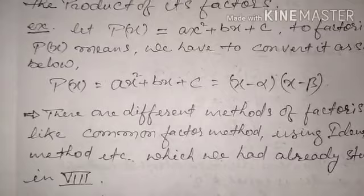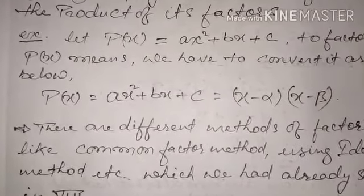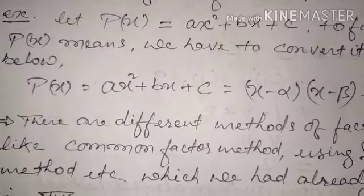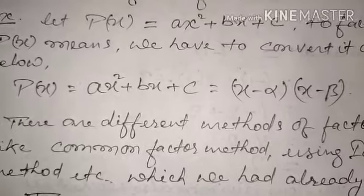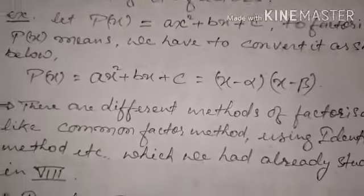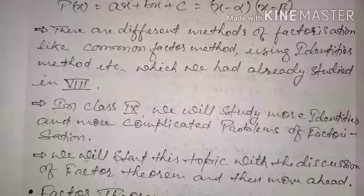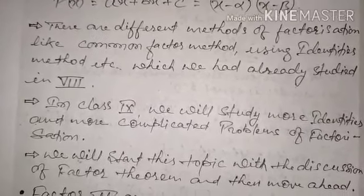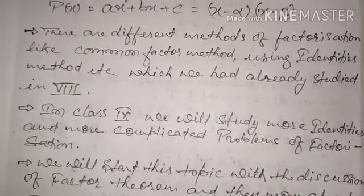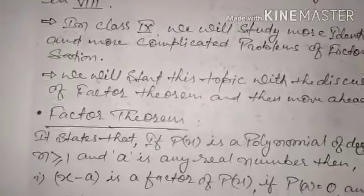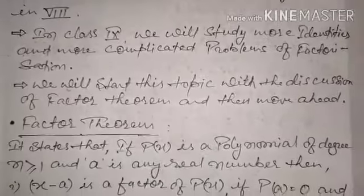To put it bilingually: factorization ka matlab hota hai ke jo bhi algebraic expressions ya polynomials aapka given hai, us polynomial ko uske form se factors ke product ke form mein express karna — that is factorization. There are different methods: common factor method and using identities, which we studied in Class 8. In Class 9 we'll study more identities and more complicated problems.